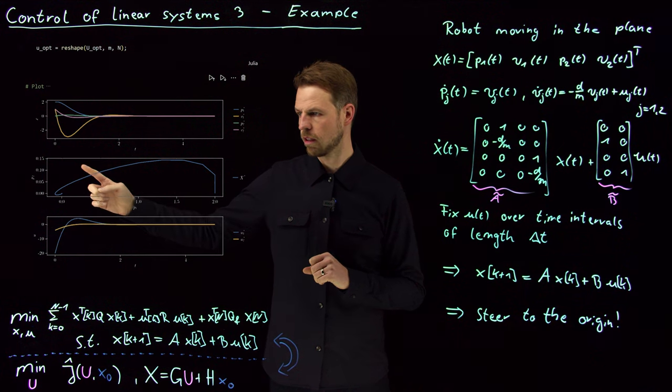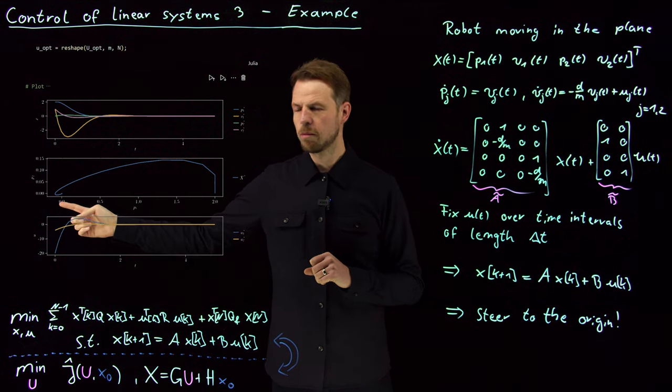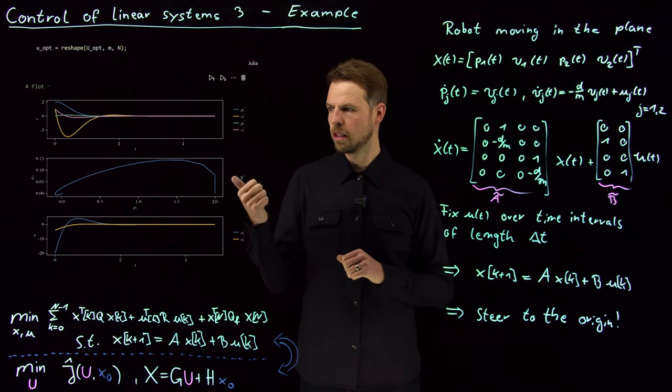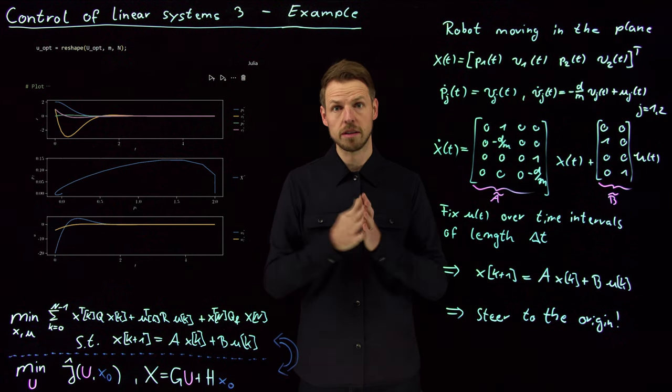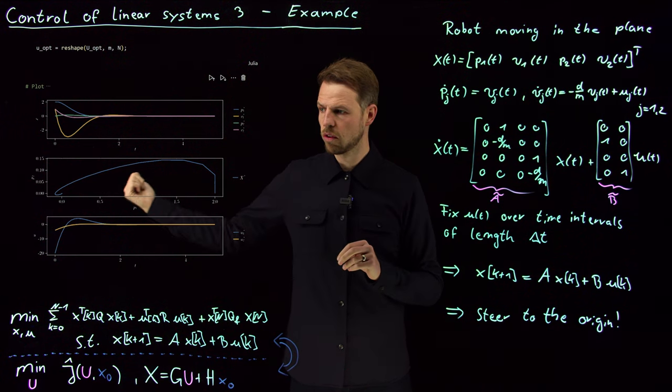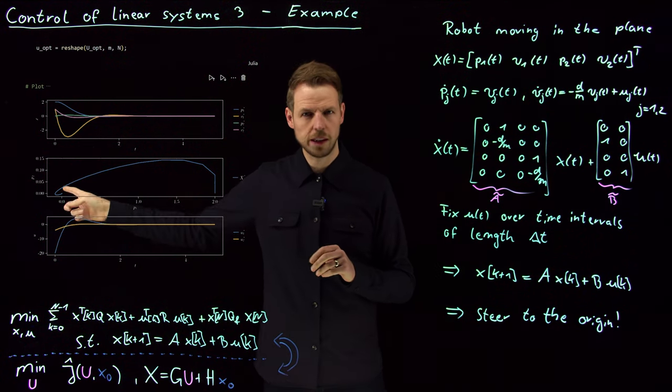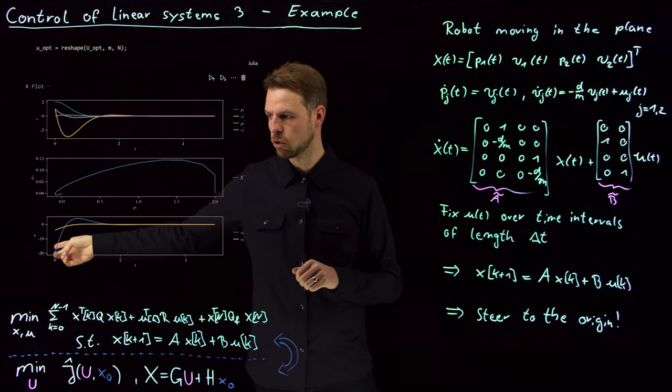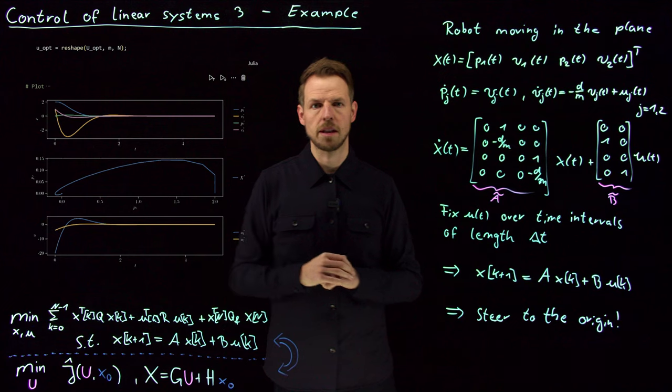You see by solving a linear system we have actually computed the optimal input to steer right into the origin. You might say why we take this detour here - this is because we're penalizing the control input. If we had changed the penalty on the U, so the R matrix, then we might as well take the closest move directly to the origin, but then the control input would go to much much higher values than just minus 20 here.